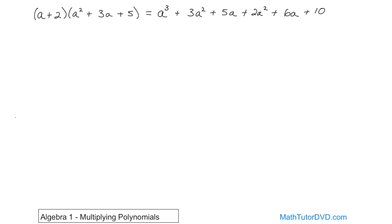Now we look for like terms. We have an a³ — there are no more a³ terms, so nothing to add there. But we do have an a². We can add it to that other a² term. First we have the a³, which didn't change. Then 3a² plus 2a²: three plus two is five, so 5a². Then 5a and 6a are like terms and together make 11a. There's only one constant — no other numbers — so plus 10. The answer is a³ + 5a² + 11a + 10.